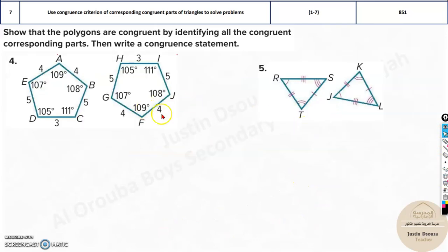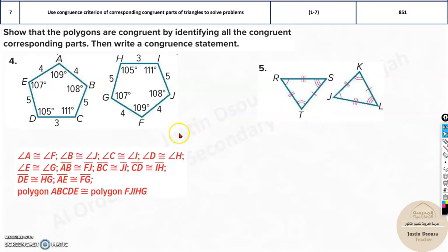So please do all these problems by yourself. They are very, very straightforward. There's nothing much in this. It's just polygons over here. Now, A is 109, over here 109. B is 108, 108. Similarly, you can do all the others. So A is corresponding to F, AF. B, J. B and J. C and C is 111. C and I. So C and I. Similarly, you should do the others.